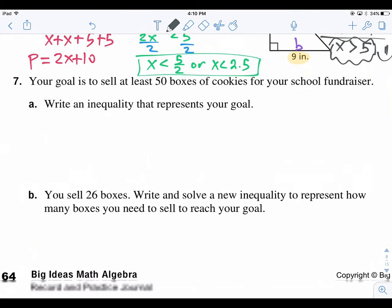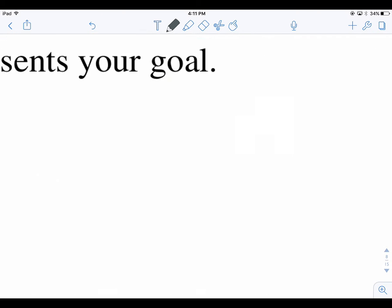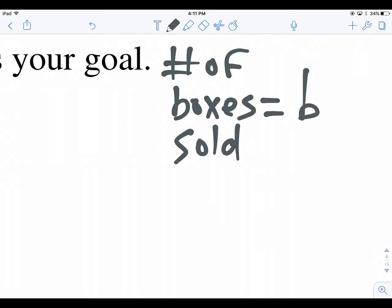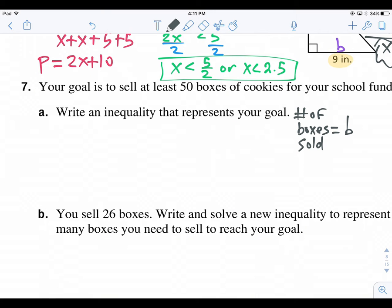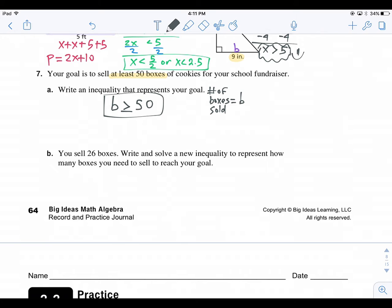Number 7. Your goal is to sell at least 50 boxes of cookies for your school fundraiser. Write an inequality that represents your goal. So number of boxes, I'm going to call it b. So number of boxes sold is going to be the letter b. So my goal is to sell at least 50 boxes. So this idea of at least 50 boxes would be this: b is going to be at least 50 or greater. See that?